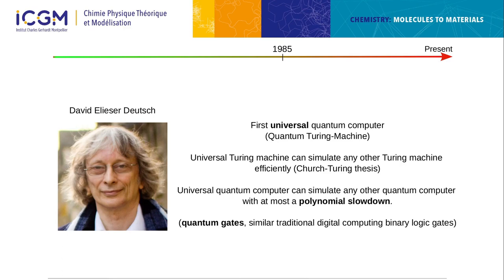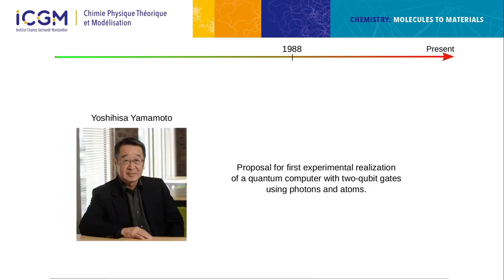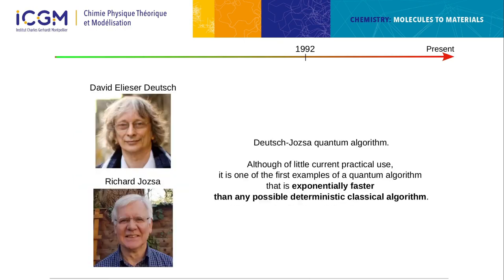Quantum gates are the analog of classical gates for digital computing with binary operations. This was all theoretical until Yoshi Yamamoto made the first proposal for experimental realization of a qubit using photons and atoms. A few years later came the first quantum algorithms — the Deutsch-Jozsa algorithm — not of big practical use but exponentially faster than any deterministic classical algorithm, marking the start of quantum advantage development.